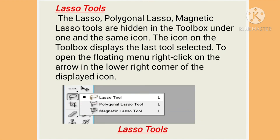The lasso, polygonal lasso, and magnetic lasso tools are hidden in the tool box under one and the same icon. The icon on the tool box displays the last tool selected. To open the floating menu, right-click on the arrow in the lower right corner of the displayed icon. Here you can see the lasso tools.